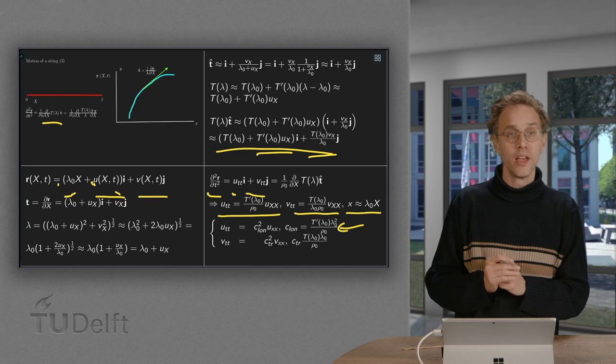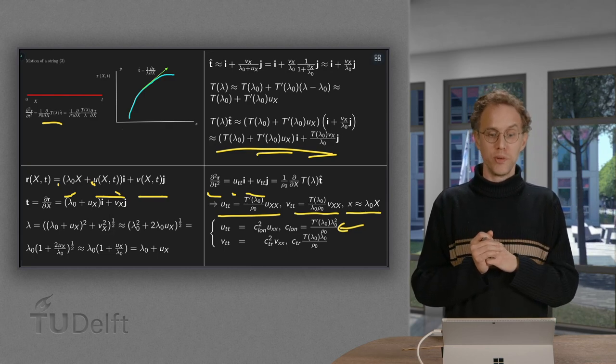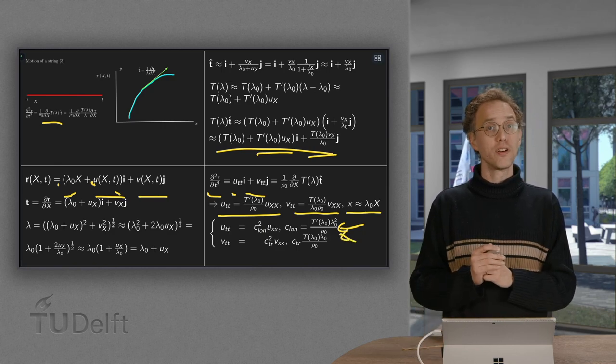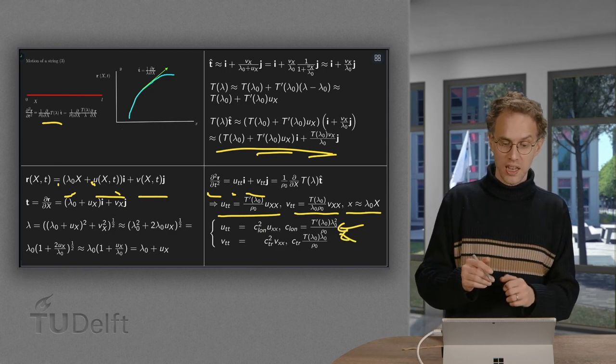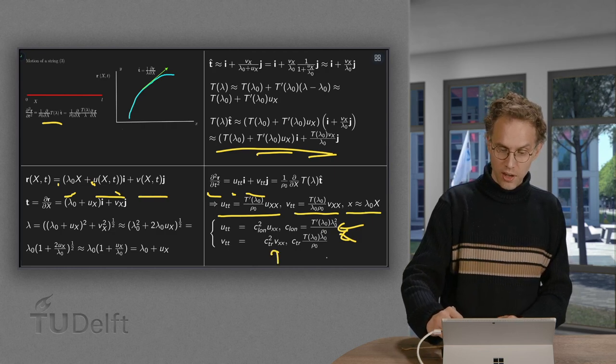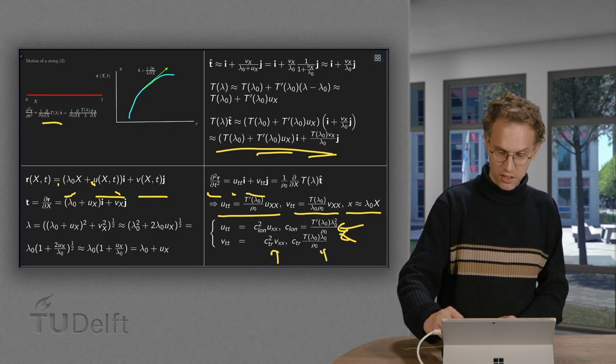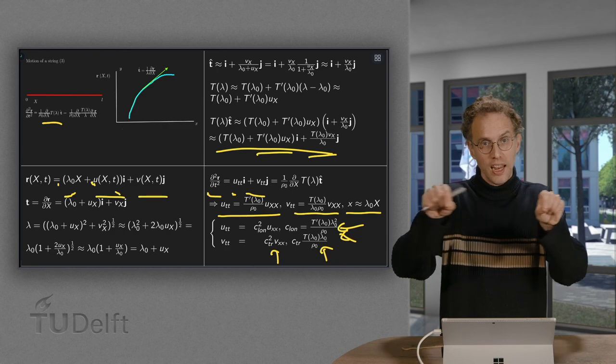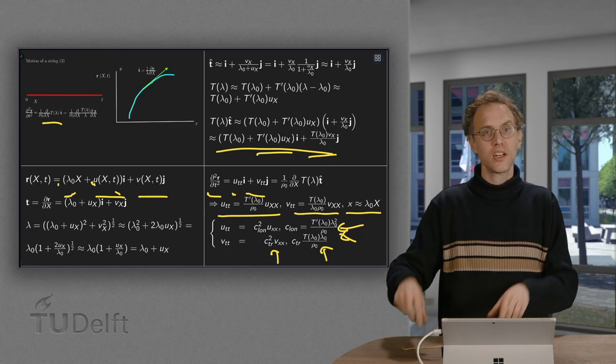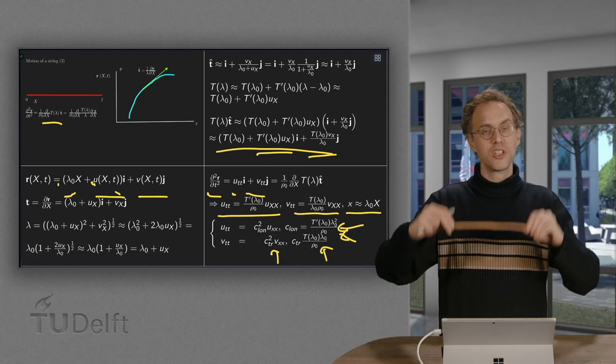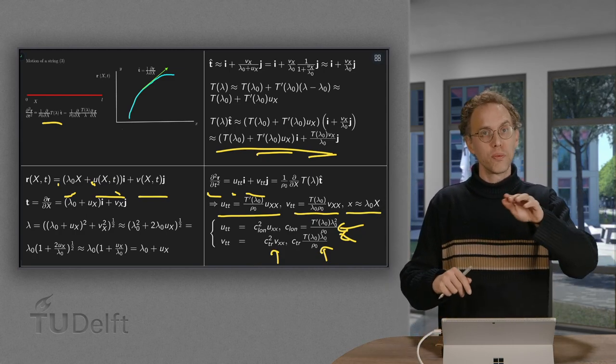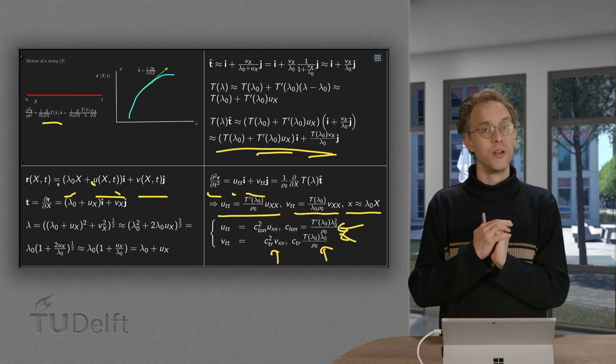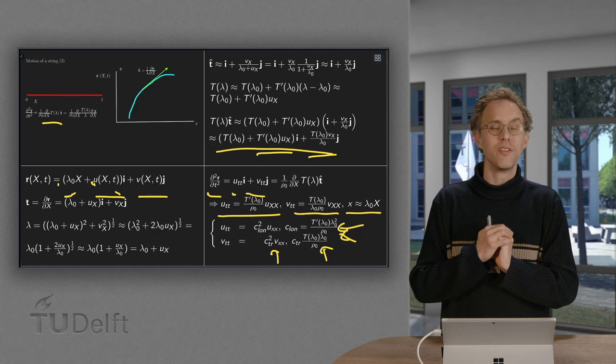So that's what we see over here. So we get the equation of the form utt equals c squared times uxx. Where the c squared is this expression over there. And for the v the same we get vtt equals some c squared times vxx. With the expression for c over there. So we get a wave equation for the movement in the longitudinal direction. The string direction. And for the perturbations which are in the transversal direction. Both are given by a wave equation.